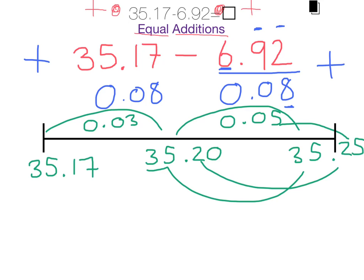Great, so my new equation is 35.25 take away 7. Now that's much easier to work out because 7 is an easy number to subtract.